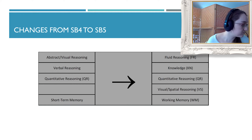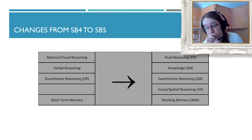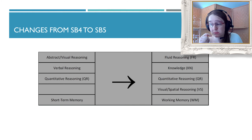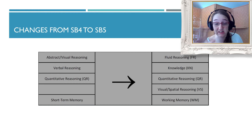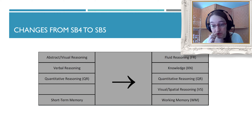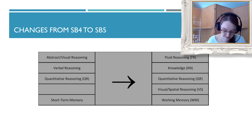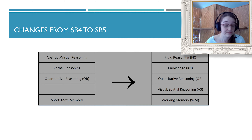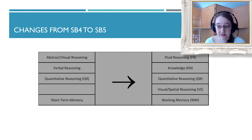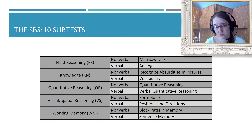Some tests have a spatial reasoning component, and it's typically in tests where it's a really essential piece of the job — including something like the dental admissions test, which is like the MCAT but for dentists, which includes a 3D rendering piece. Spatial reasoning is an important aspect that is not covered as strongly in many tests, but it's becoming more common. Each of those five factors has a verbal and nonverbal part within the subtests.